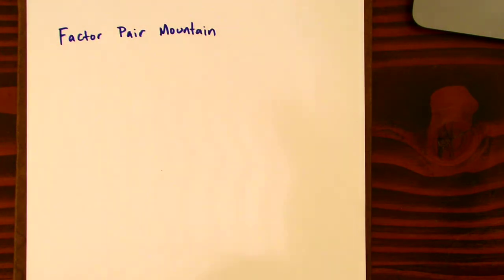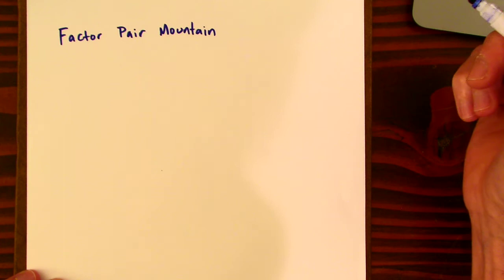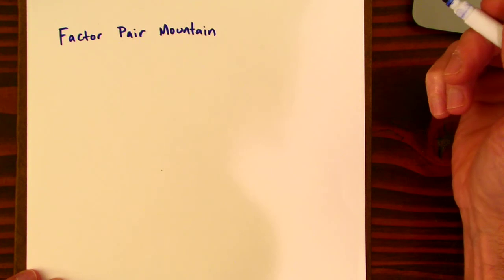Okay, we're going to go over Factor Pair Mountain, which is just a way of organizing factors that we find for any number.